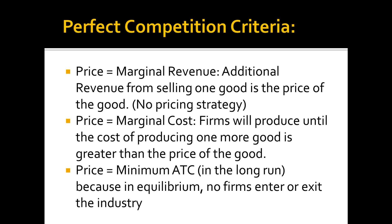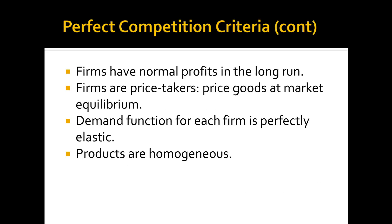In perfect competition, firms produce at the minimum average total cost, because in equilibrium no firms enter or leave the industry. Firms also make no money in the long run — they only have normal profits. They are also price takers: they take the prices from the market and have no power to change the price they sell at.